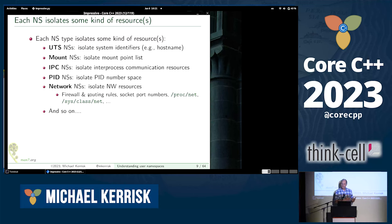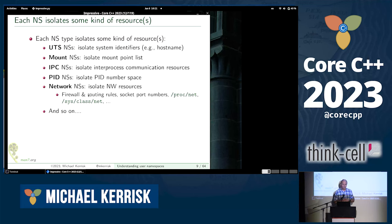UTS namespaces isolate hostname and domain name. Mount namespaces isolate the mount list — this means different groups of processes can see different mounted file systems. Network namespaces isolate network infrastructure; each container, for example, can have its own network infrastructure.